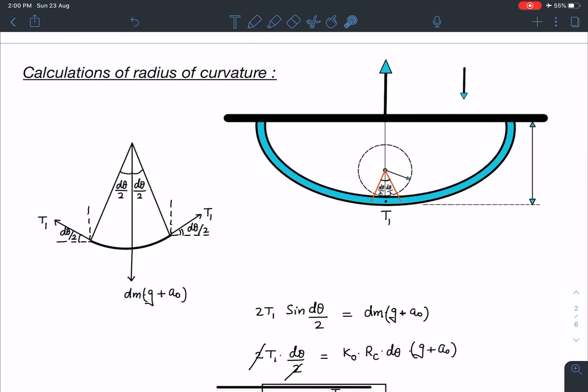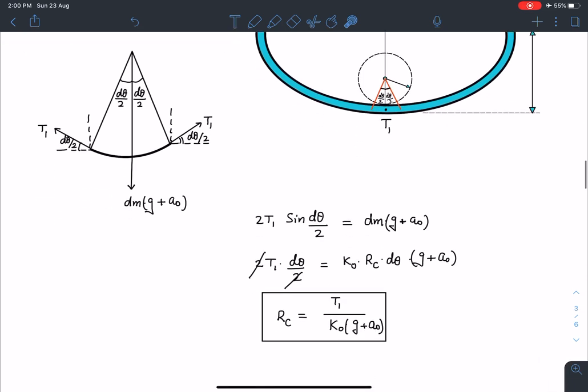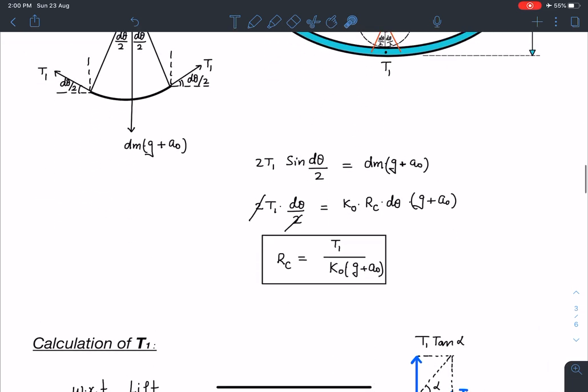All right. So now when I balance these forces, I am going to get this rc is equal to T1 by k0 times g plus a0. So k0 is known to us. g plus a0 is also known to us. So if somehow I can find out this tension T1, if this value is known to me, I will get the answer for radius of curvature. And in one of the parts, we have to find this tension at lowermost point as well.